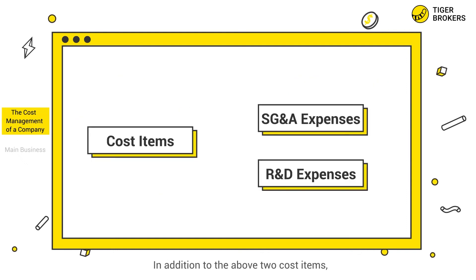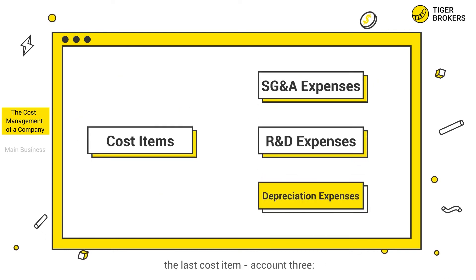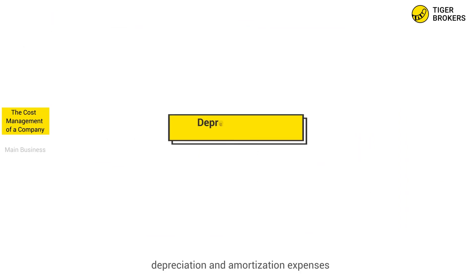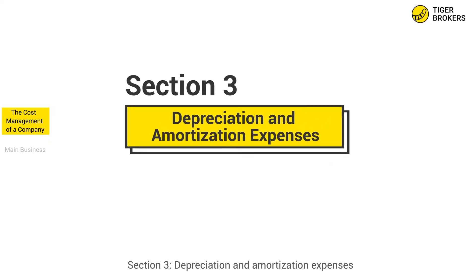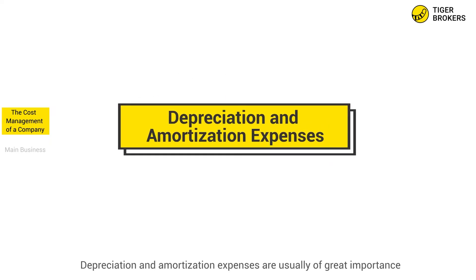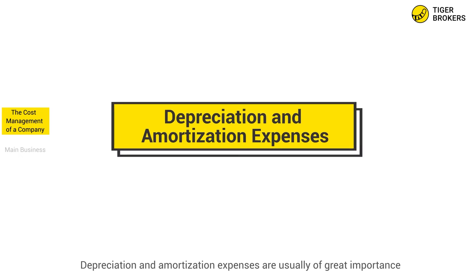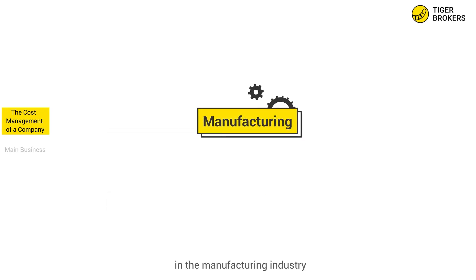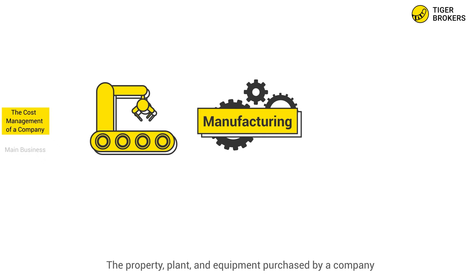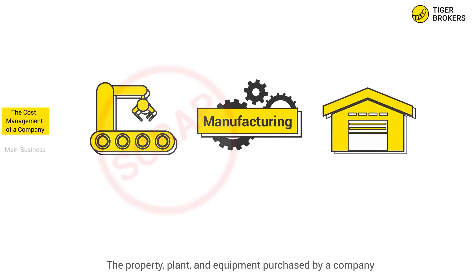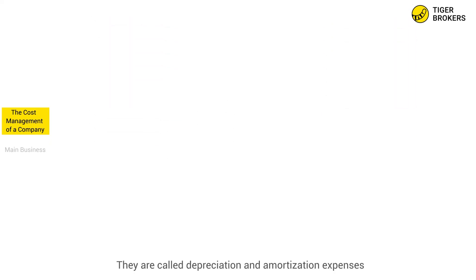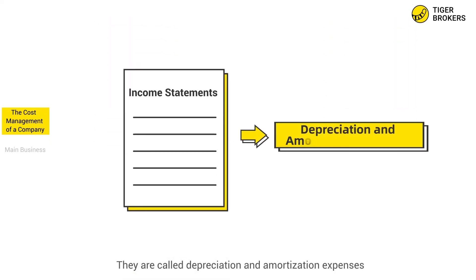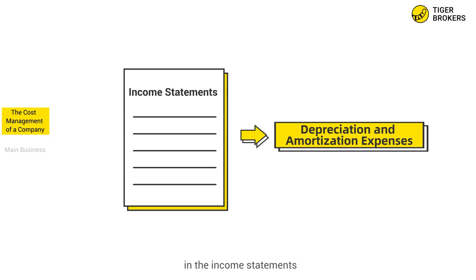In addition to the above two cost items, the last cost item is Section 3: Depreciation and Amortization Expenses. Depreciation and amortization expenses are usually of great importance in the manufacturing industry. The property, plant, and equipment purchased by a company will eventually be scrapped due to wear and tear, and these are called depreciation and amortization expenses in the income statements.